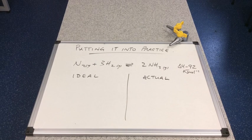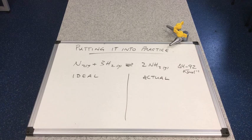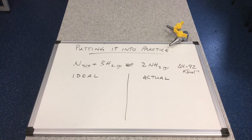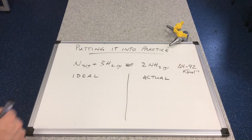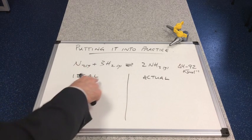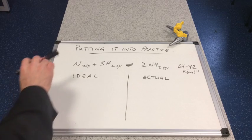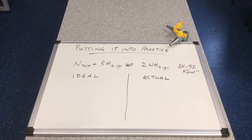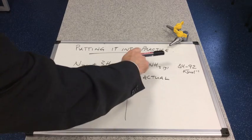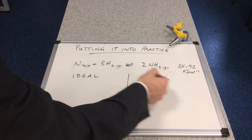So if we put this all into practice now into an actual industrial process, we've got the Haber process back on the board there and we're going to use everything we've learned about Le Chatelier's principle in this video to come up with the ideal conditions for the maximum yield of ammonia. In other words, we want conditions that will favor the forwards reaction and give us lots of product.